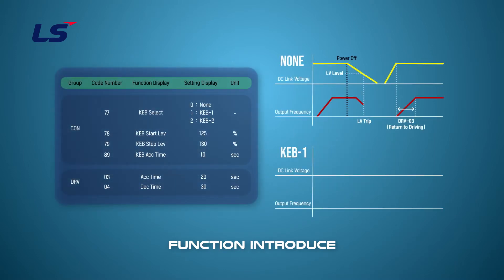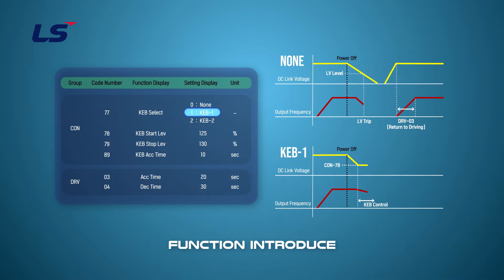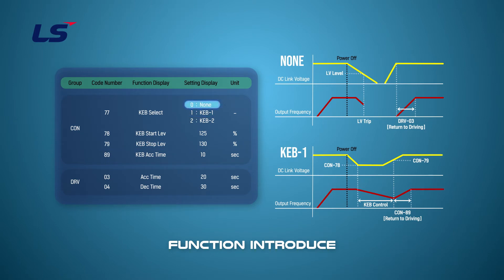KEB has two control methods: KEB1 mode and KEB2 mode. In KEB1 mode, when the input power is cut off, the inverter output frequency is controlled, and the regenerative energy generated from the motor is supplied to the inverter. KEB control starts from the KEB start level set in CON-78 and operates normally after it reaches the KEB stop level set in CON-79. The status of DC link voltage and output frequency values according to the presence or absence of KEB operation is as follows.